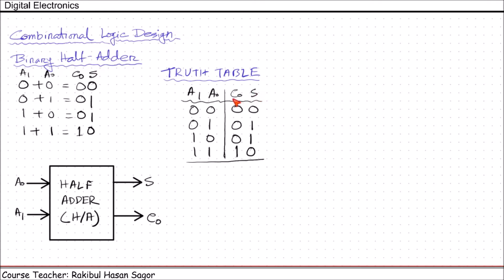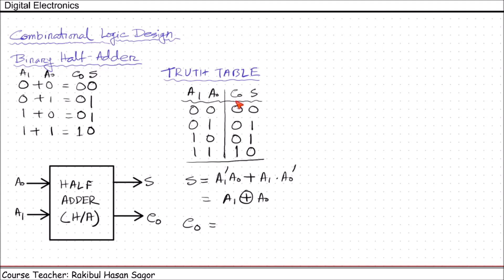We have two output functions: S and carry (C). For S, S equals 1 when A0 equals 1 and A1 equals 0, giving A1' · A0, or when A1 equals 1 and A0 equals 0, giving A1 · A0'. This can be written in SOP form as A1 XOR A0. The carry output equals 1 only for one condition: when A0 equals 1 and A1 equals 1, so carry equals A1 · A0.